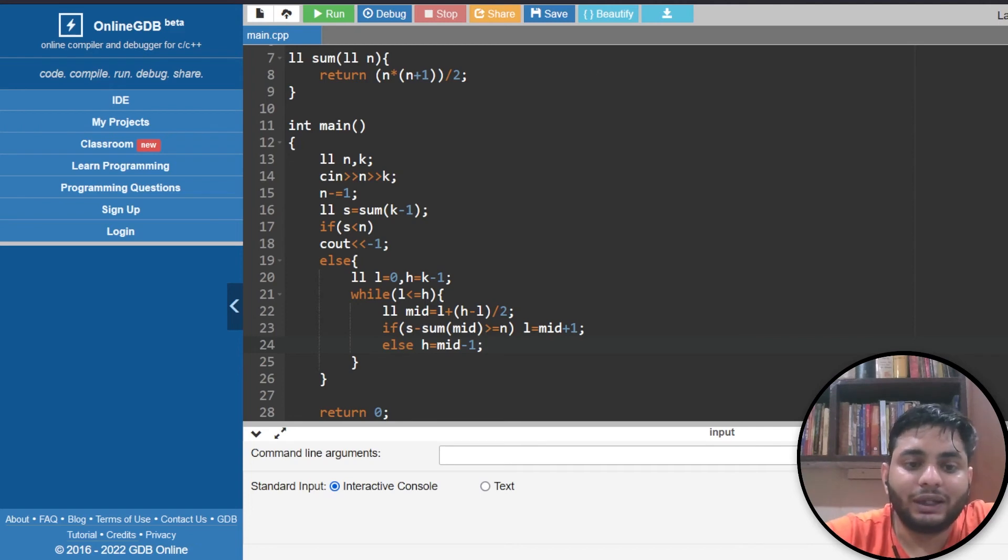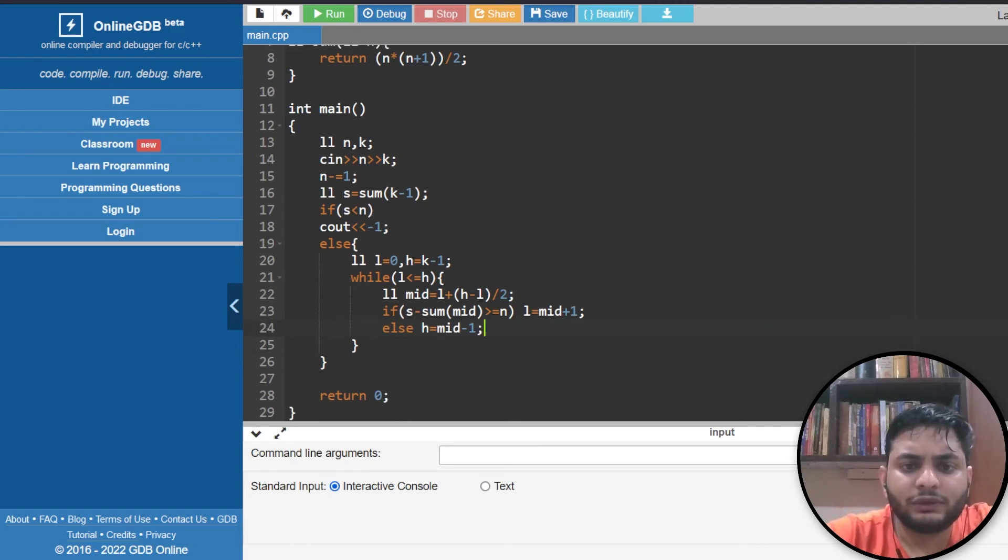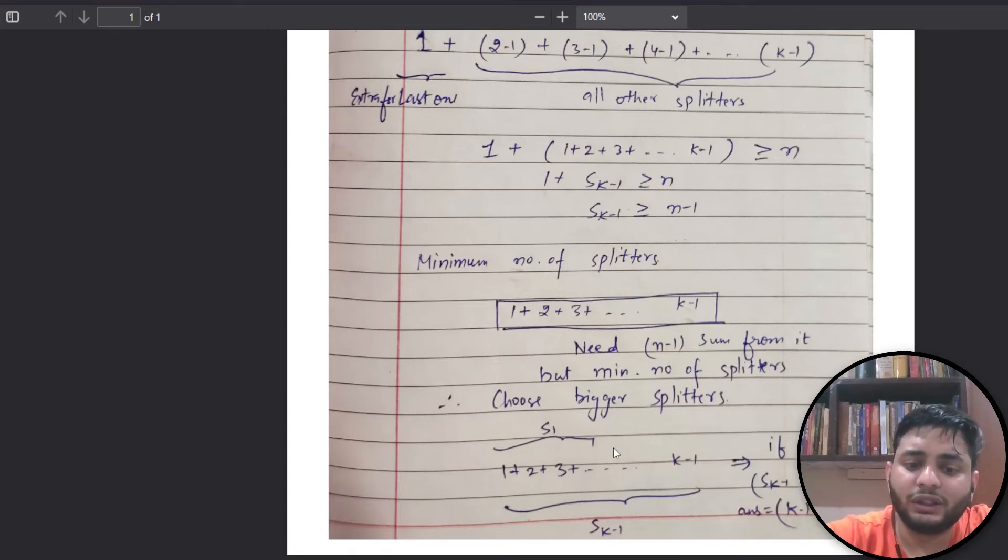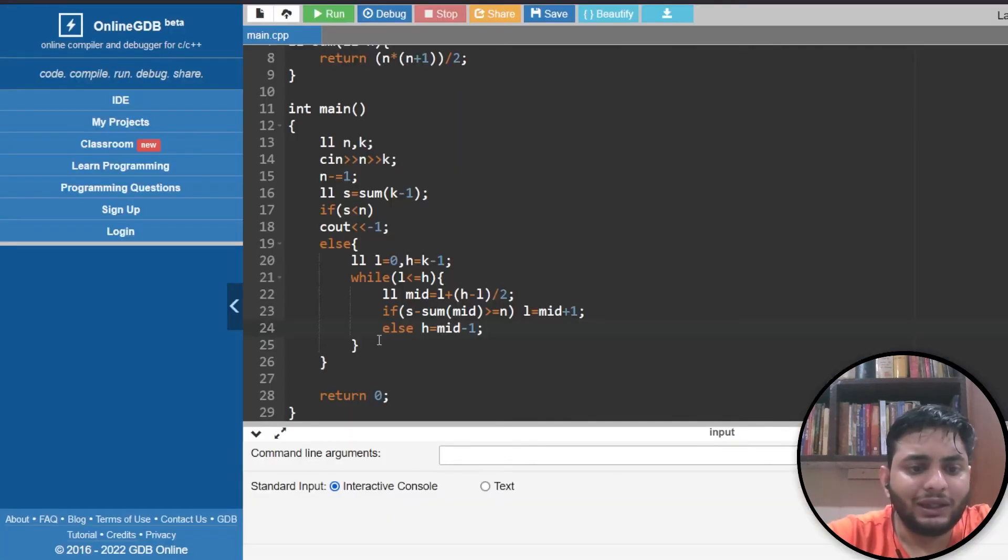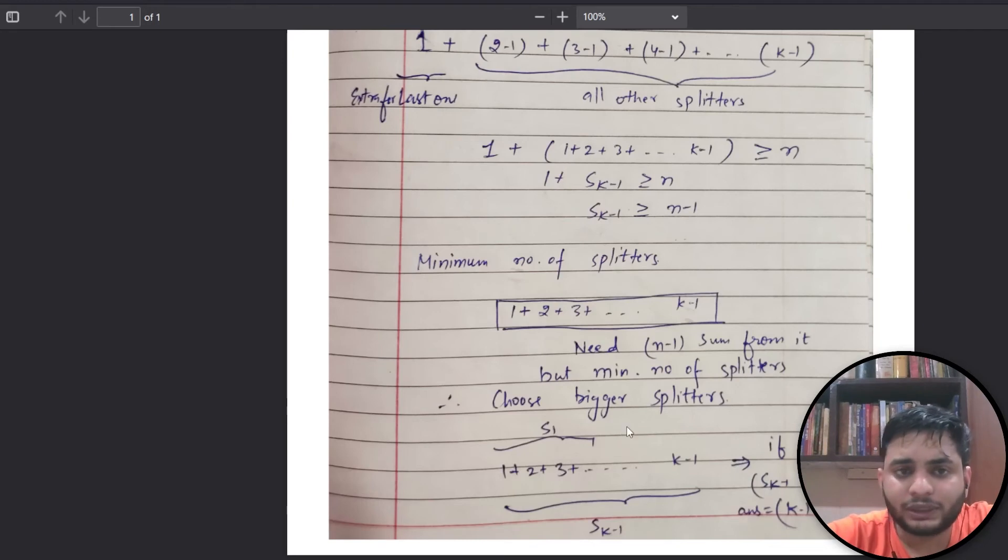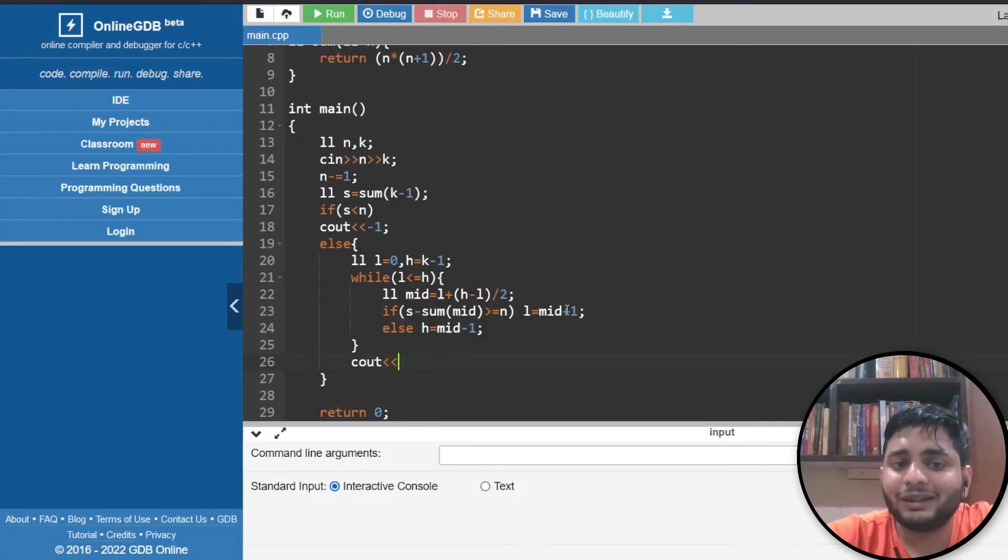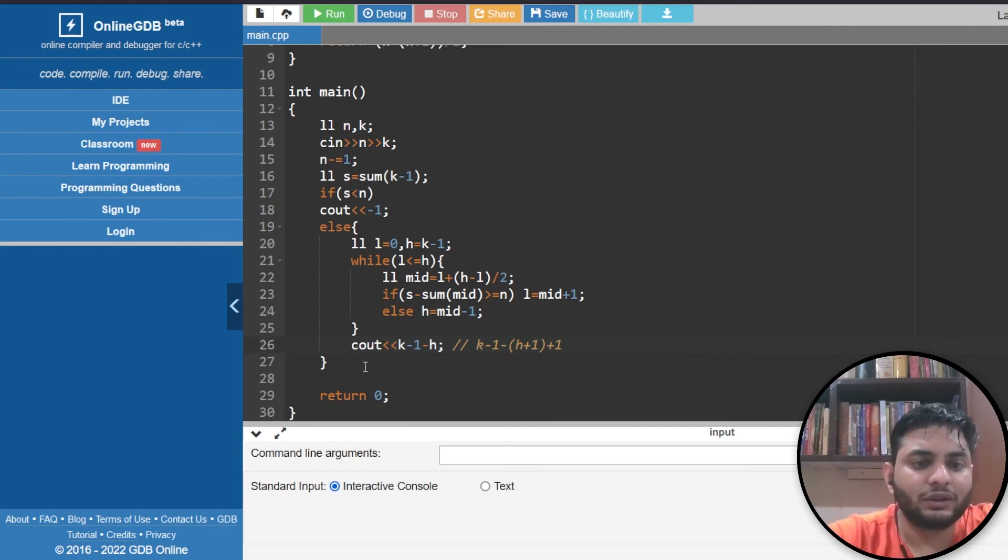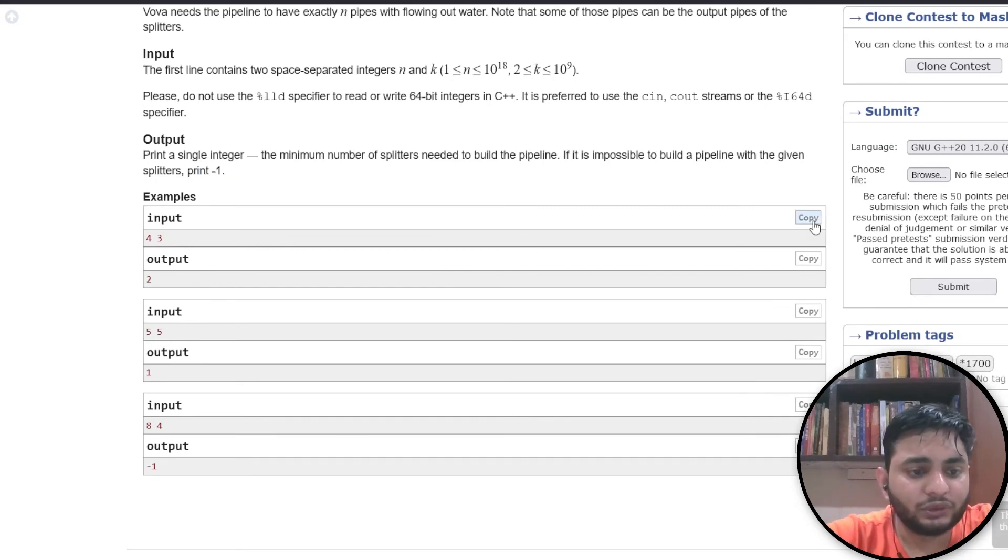If I can achieve n using splitters from this range, I need to minimize by getting a smaller range. Otherwise I need to decrease my high. After binary search, low will point to the answer position. The final answer is k minus 1 minus h, which is the end minus the starting position. This gives us the number of splitters needed.